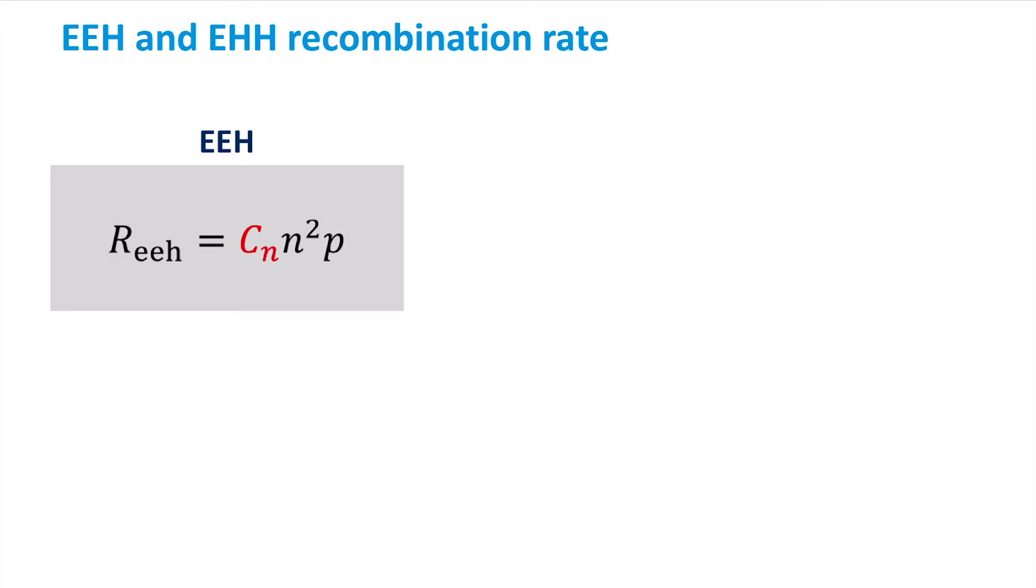Cn is a proportionality constant. For the EHH process, the hole concentration is squared, while the electron concentration is not, and Cp is a proportionality constant for EHH Auger recombination.